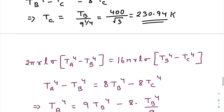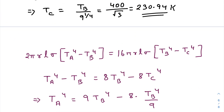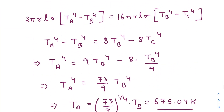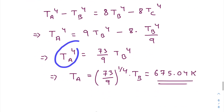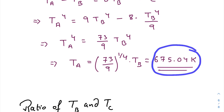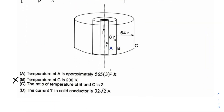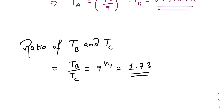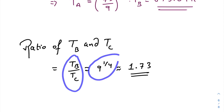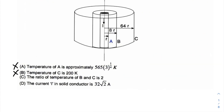Now equating the A-to-B equation with the B-to-C equation and substituting the value of T_C, we get Tₐ⁴ = (73/9) · T_B⁴. Putting in T_B = 400 K, we calculate Tₐ ≈ 675.04 K, which is nowhere equal to the value given in the options — so option A is also wrong. Checking option C, the ratio T_B/T_C = 9^(1/4) ≈ 1.73, which does not match the given option — so option C is also wrong.